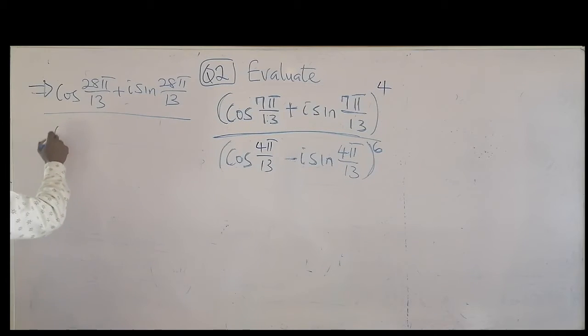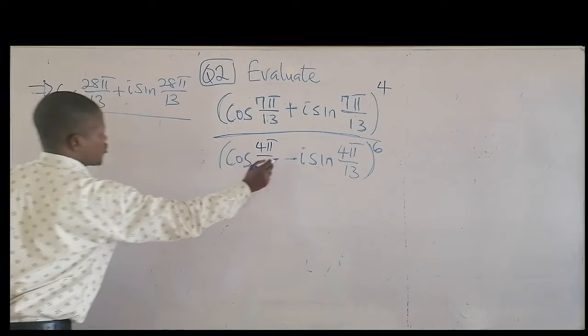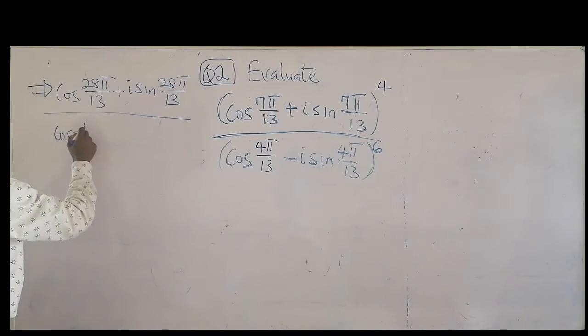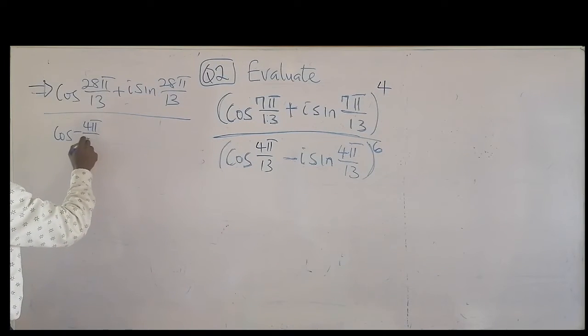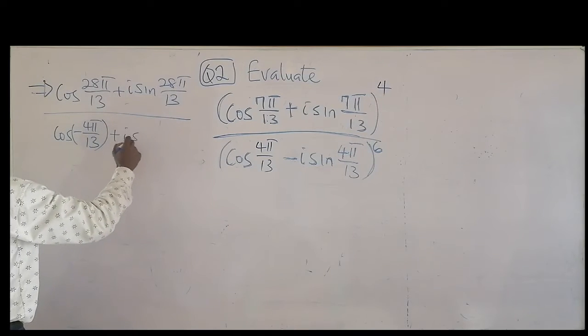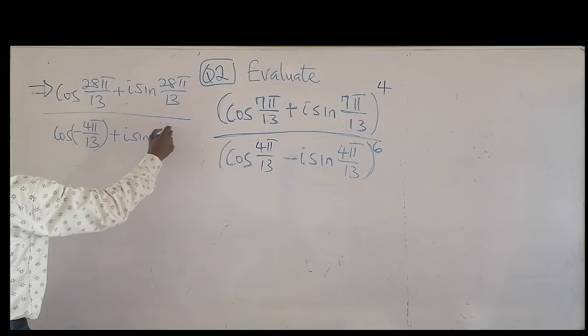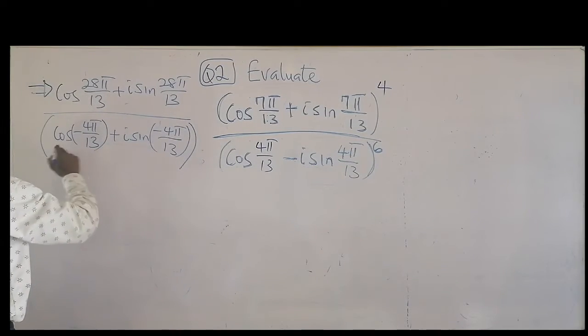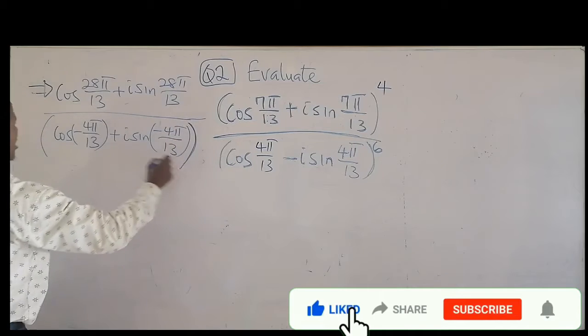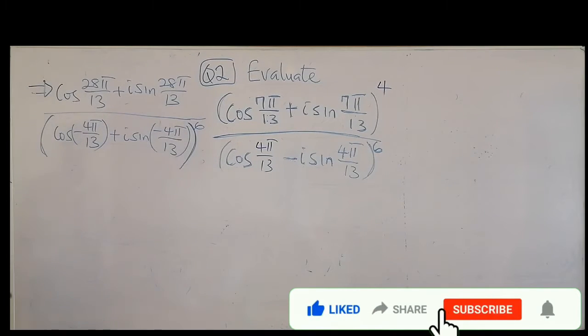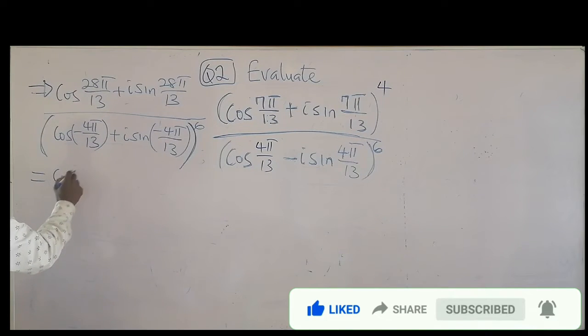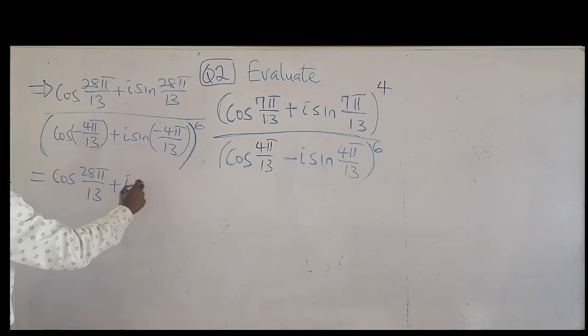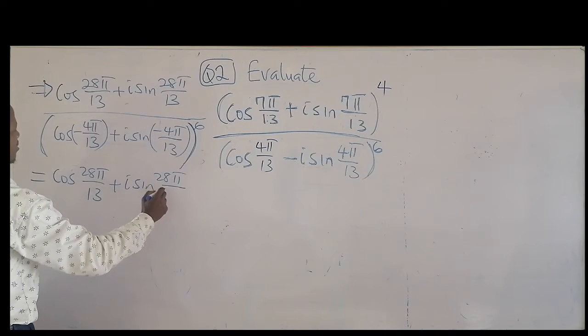The denominator, I need to quickly turn this to positive, now minus 4 pi over 13, and plus i sine minus 4 pi over 13. Don't forget the brackets. And now we've got power 6. So we now have cosine 28 pi over 18 plus i sine 38 pi over 13.